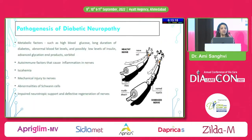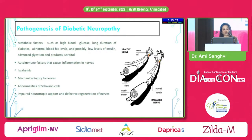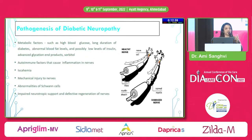What are the pathogenesis factors causing neuropathy? Most common are metabolic factors like dysglycemia, dyslipidemia, long duration of diabetes, advanced glycation end products, sorbitol, autoimmune factors causing nerve inflammation, ischemia, mechanical injury, abnormalities of Schwann cells, impaired neurotrophic support and defective regeneration. Notably, a sudden decrease in A1c — say by 2% in 3 months — can cause acute painful neuropathy. There is also a term called insulin neuritis, a small fiber neuropathy seen in patients on insulin.